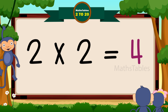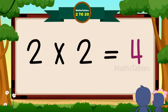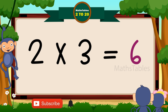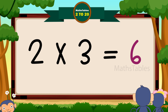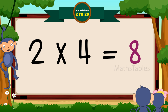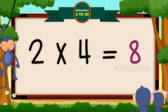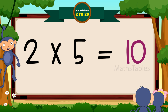Two twos are four. Two twos are four. Two threes are six. Two threes are six. Two fours are eight. Two fives are ten.